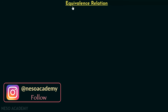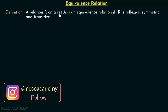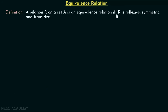First, we will discuss the definition of equivalence relation. A relation R on a set A is an equivalence relation if and only if R is reflexive, symmetric, and transitive. All three properties must be satisfied.